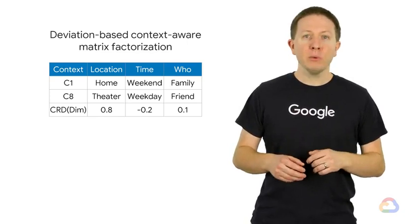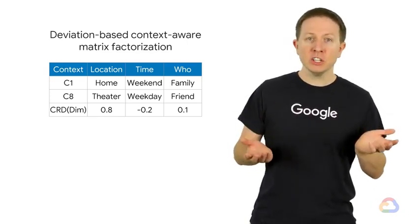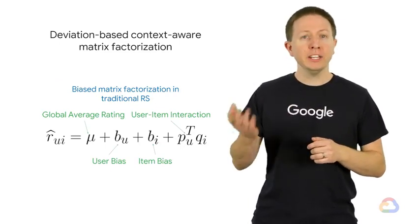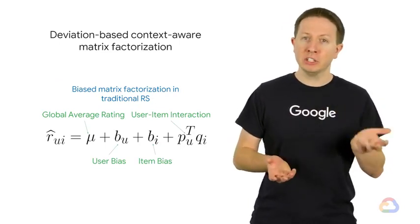So, how do we use the contextual rating deviation to adjust rating predictions? In traditional recommendation systems, we find in our ratings, we can use standard matrix factorization.